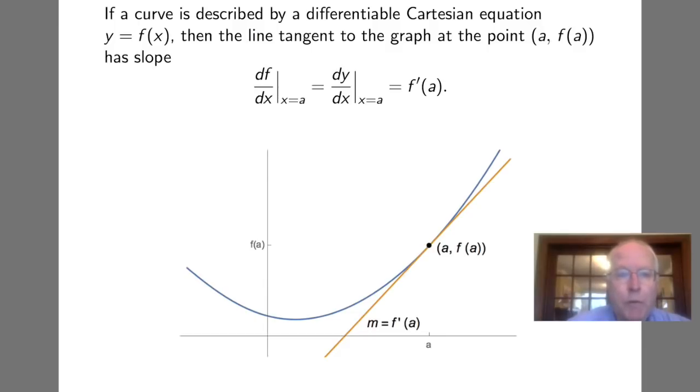Back in Calc 1 we learned that if a curve is described by a differentiable Cartesian equation like y equals f of x, then we can find the line tangent to the graph at the point a, f of a, and we can compute its slope by taking the derivative df/dx at x equals a, or f prime of a, which turns out to be the slope of the tangent line.